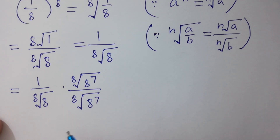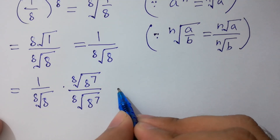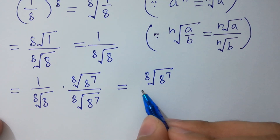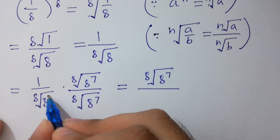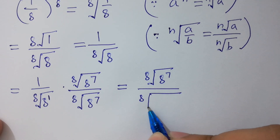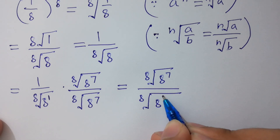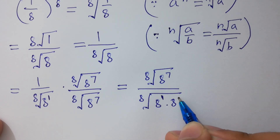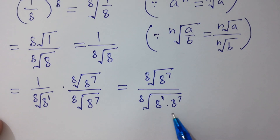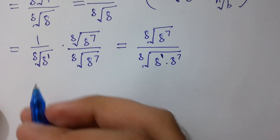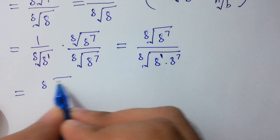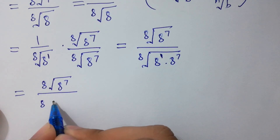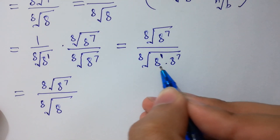In the next step, let's simplify. We can write the 8th root of 8 to the power 7 over 8 to the power 7. Since the base is the same, powers will be added. So we can write the 8th root of 8 to the power 7 over the 8th root of 8 to the power 1 plus 7.